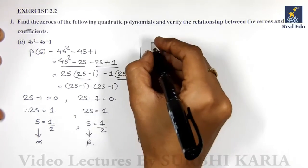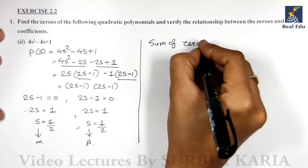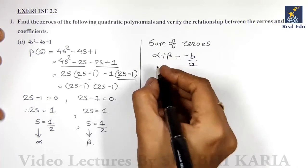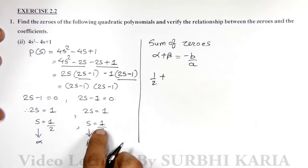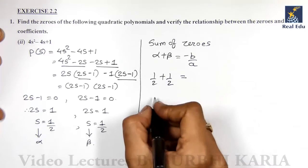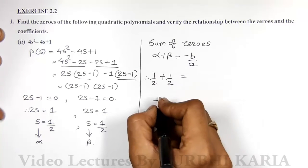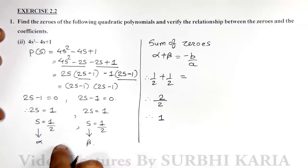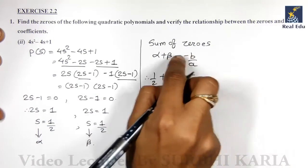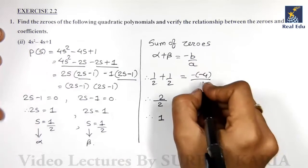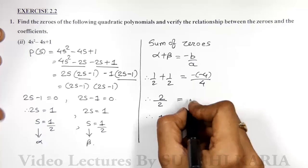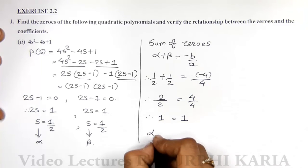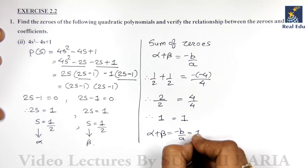Sum of zeros: α + β = -b/a. Check here: 1/2 + 1/2. Taking 2 as LCM, 1 + 1 = 2, so 2/2 = 1. Now -b/a: -b means -(-4) / a, where a is 4. Minus minus is plus, so 4/4 = 1. Sum of zeros α + β = -b/a = 1.